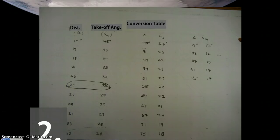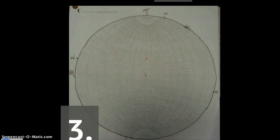So first I found 345 degrees, I marked a dash for it and turned it to north. Then I looked at my conversion table and my distance was 25 degrees, so my takeoff angle is 30 degrees.